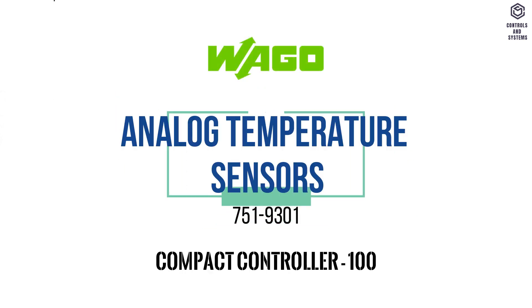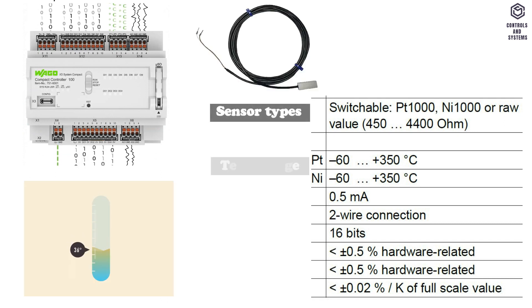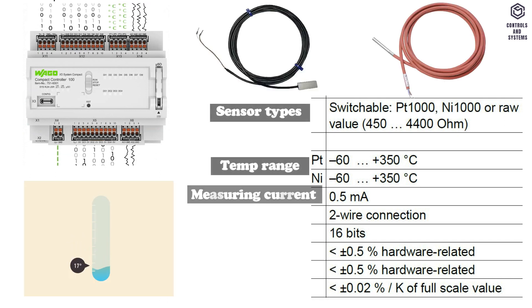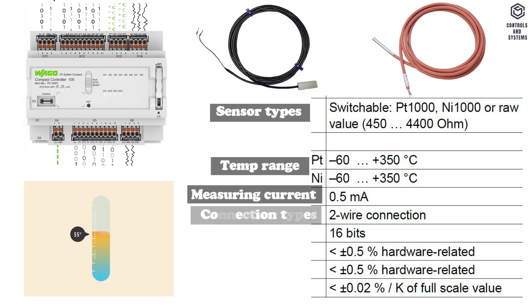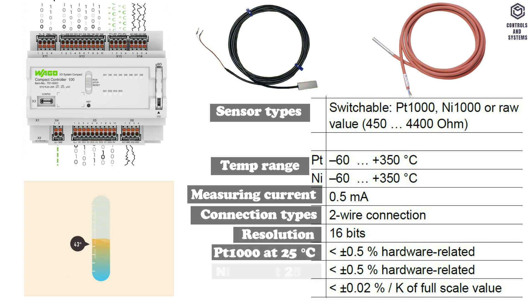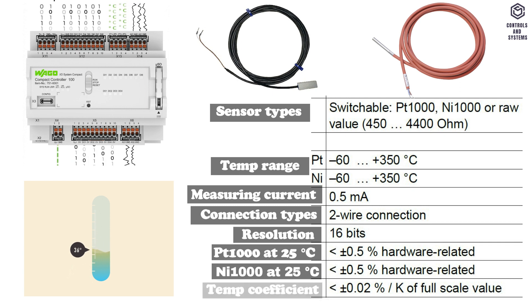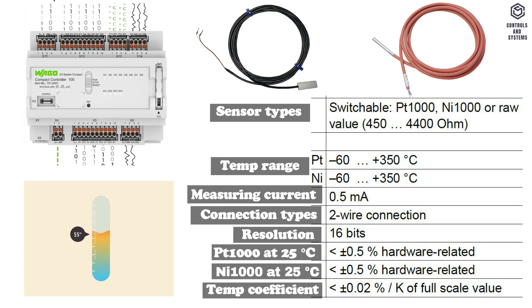Analog temperature sensors: Sensor types, temperature range, measuring current, connection types, resolution, measuring accuracy for PT1000 and NI1000, and temperature coefficient specifications are shown in the table.